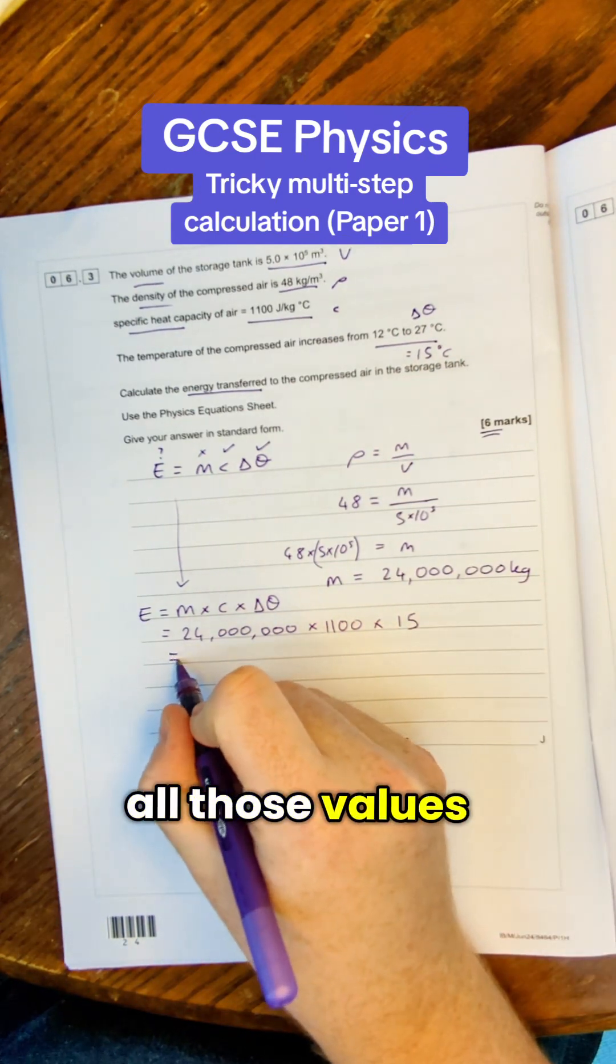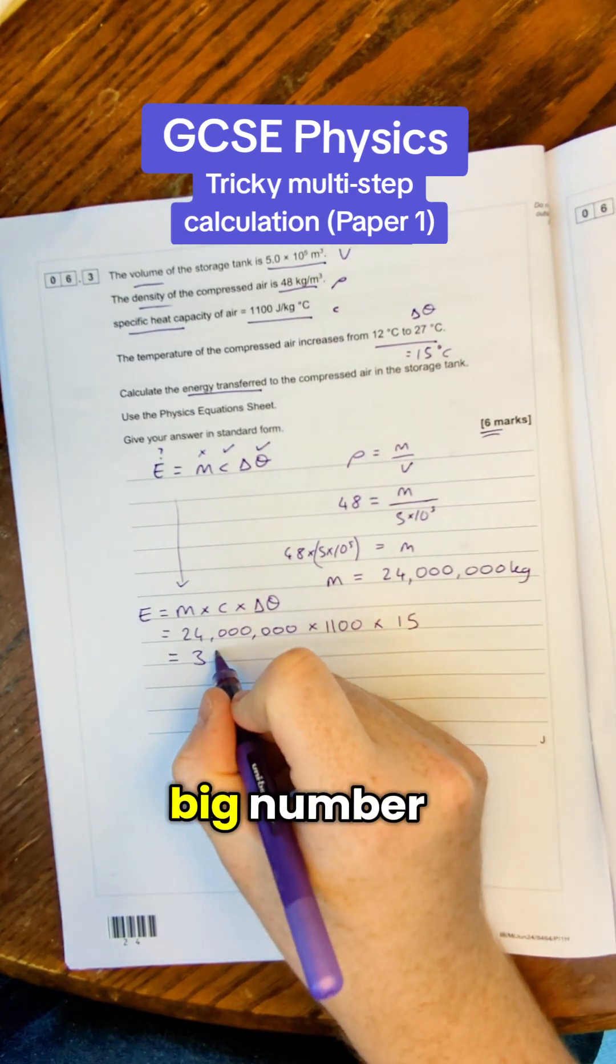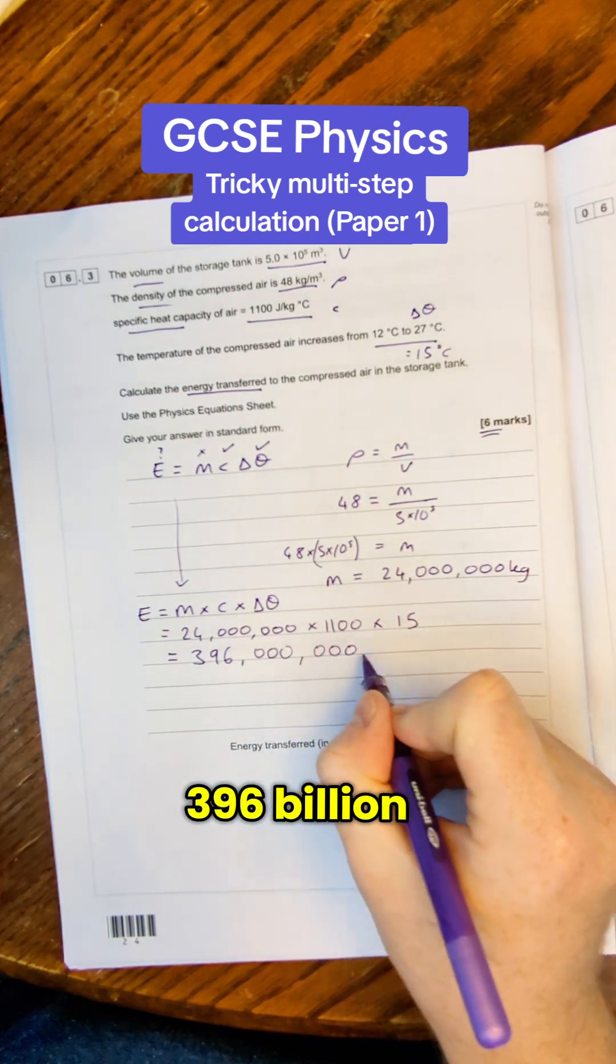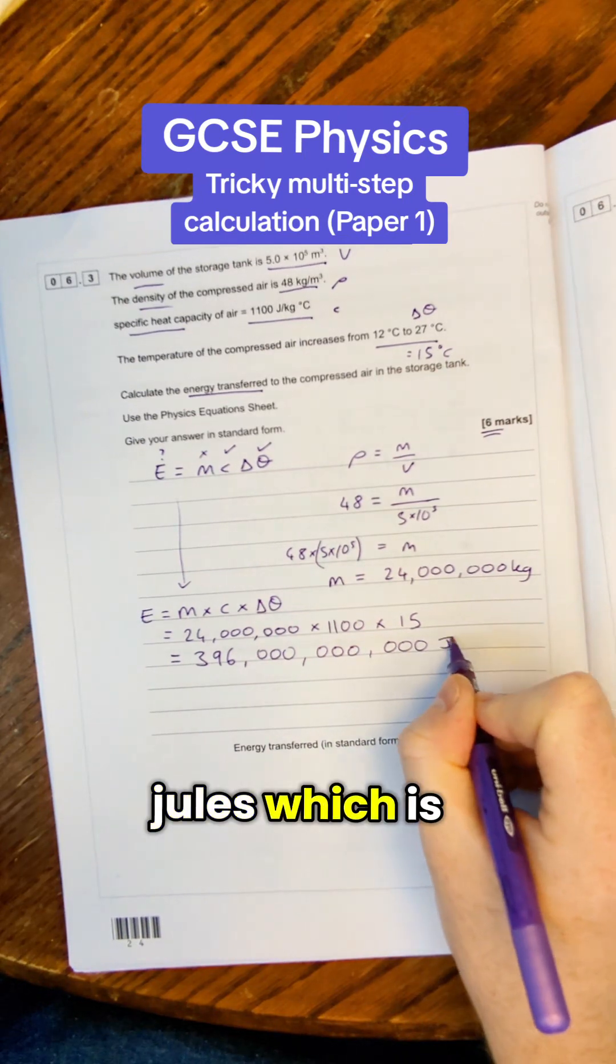Once we've got all those values in we just need to multiply them together and it's going to get a really big number because there's a massive amount of energy in this facility. It's going to be 396 billion joules which is pretty crazy.